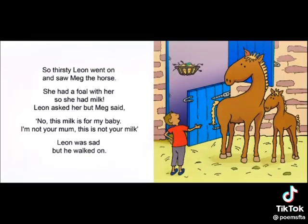Thirsty Leon went on and saw Meg the horse. She had a foal with her, so she had milk. Leon asked her but Meg said, no, this milk's for my baby. I'm not your mum. This is not your milk. Leon was sad but he walked on.